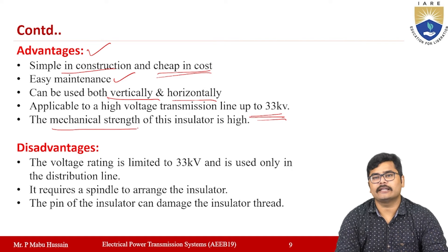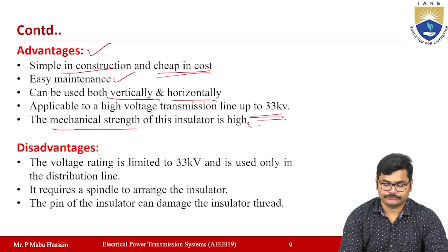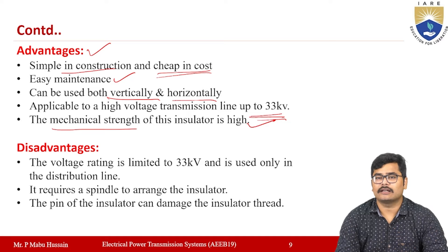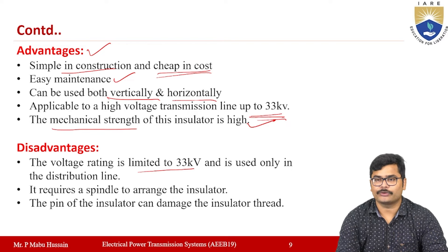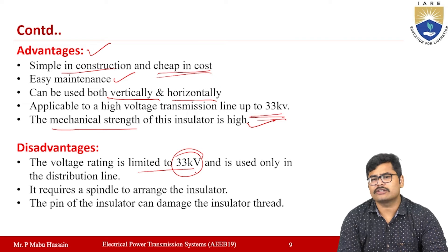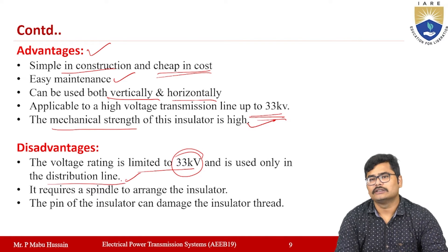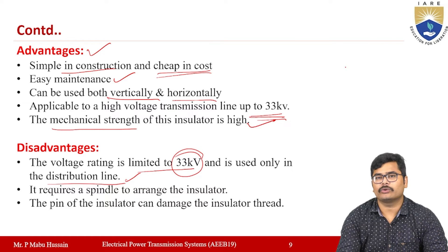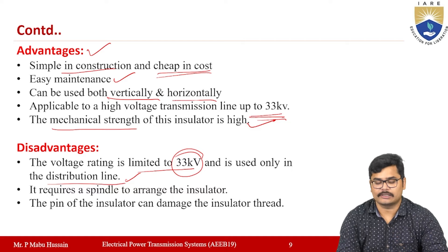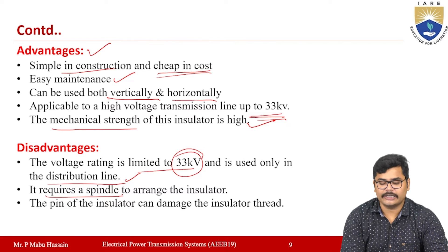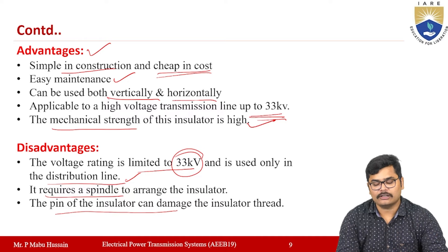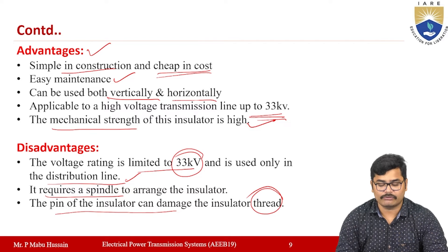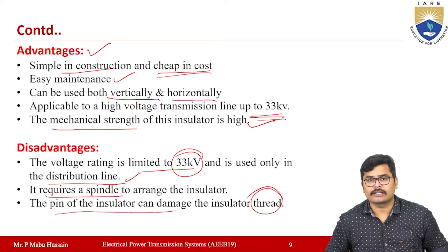The main disadvantage is that pin type insulators are limited to 33 kV only and cannot be used beyond that. For high power transmission at 132 kV or 220 kV, these insulators cannot be used — they are generally only suitable for distribution lines. Additionally, a spindle is always required to arrange them, and pin type insulators can damage the insulator thread.